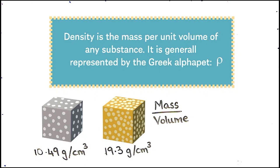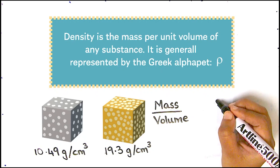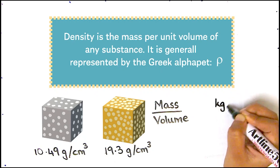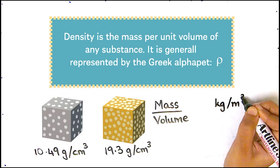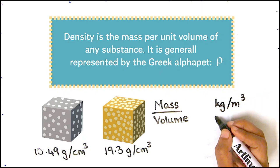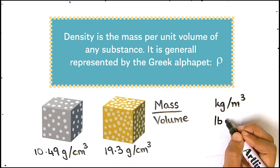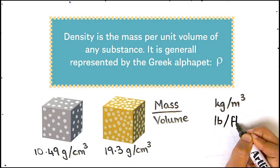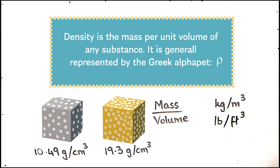Density can be in any unit of measurement that you want. It can be given in terms of how many kilograms are there in one meter cube of a substance, or how many pounds are there in one cubic foot of a substance. These three are just commonly used units for density, but you can use any sets of units that you like.